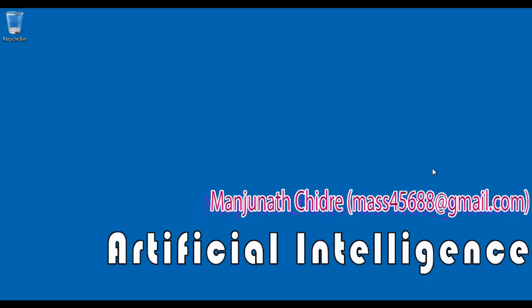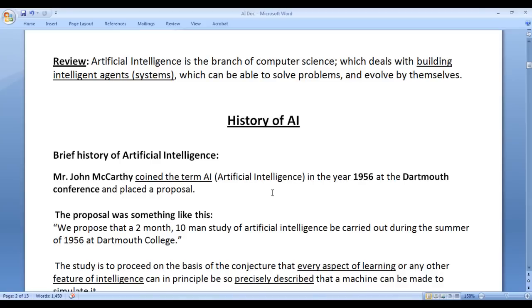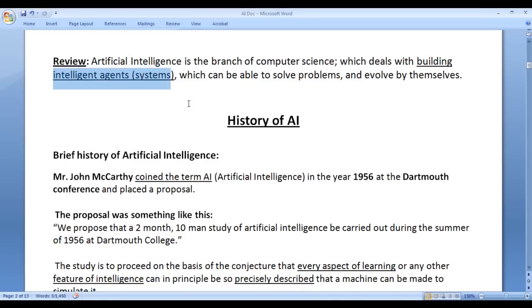Hello friends, welcome to the artificial intelligence video tutorial series. In the previous video tutorial, we understood that artificial intelligence is the branch of computer science which deals with building intelligent agents or intelligent systems which can be able to solve problems and evolve by themselves.